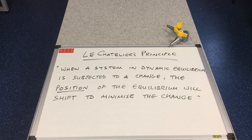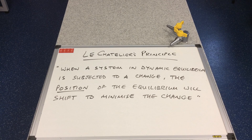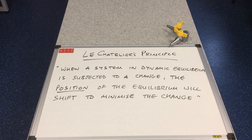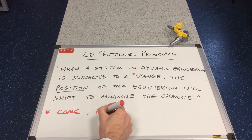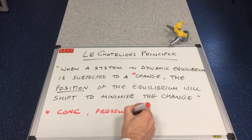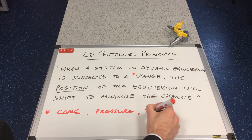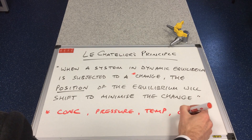Before we start looking at these factors I need to mention a very important principle we use in chemistry — Le Chatelier's principle. When a system in dynamic equilibrium is subjected to a change, the position of the equilibrium will shift to minimize the change. The changes we're going to look at are concentration, pressure (just for gaseous equilibria), temperature, and adding a catalyst.